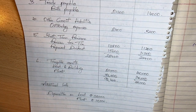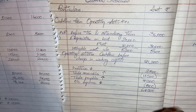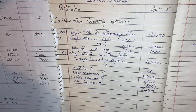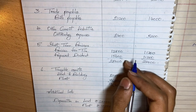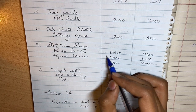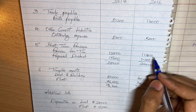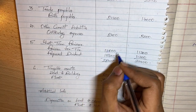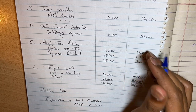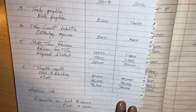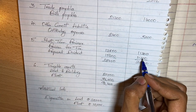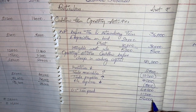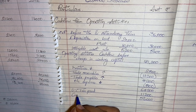Tax is paid under operating activities. We assume that this year's provision will be paid next year, and what we are paying now is last year's provision. So we pay tax of 11,200 from last year's short-term provisions. Deducting that gives us the cash flow from operating activities.